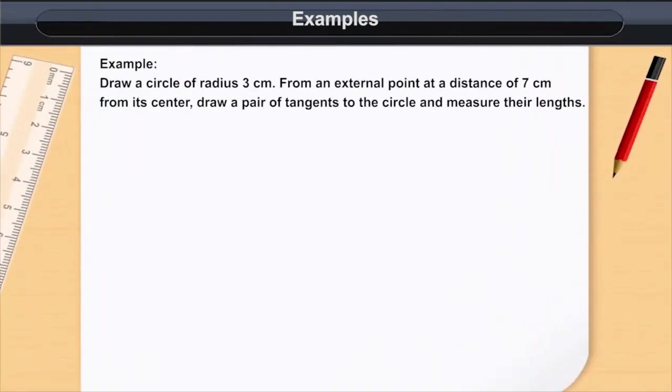Example: Draw a circle of radius 3 cm. From an external point at a distance of 7 cm from its center, draw a pair of tangents to the circle and measure their lengths.